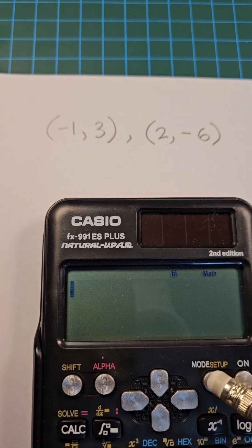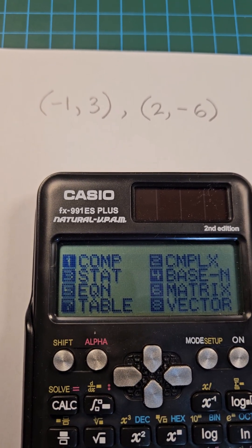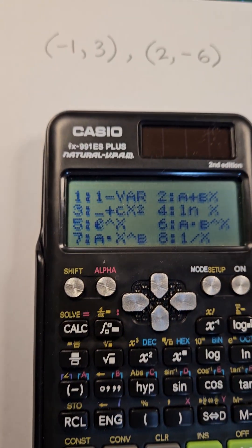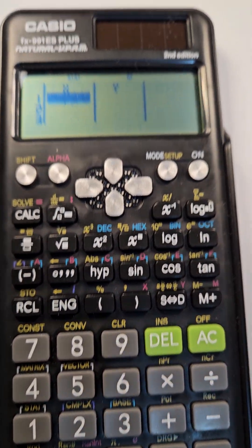We can use the linear regression mode on a Casio Scientific Calculator to do so. Press mode, then option 3 stat, then option 2 a plus bx - that's linear regression mode.